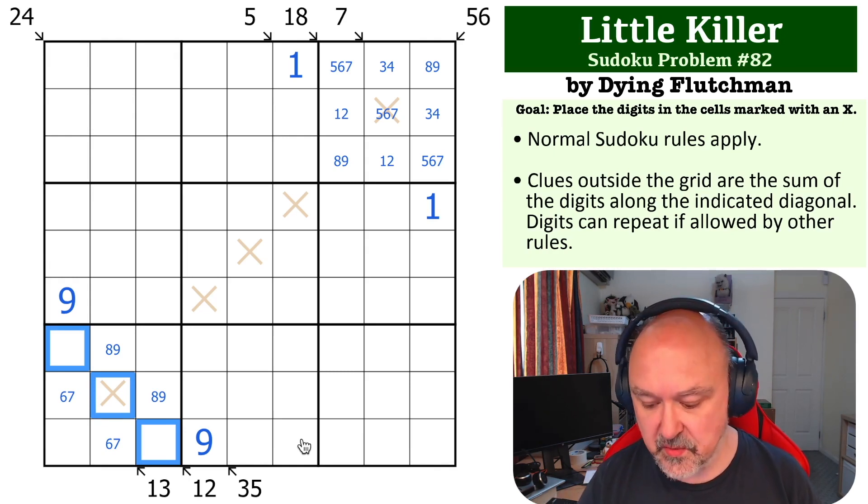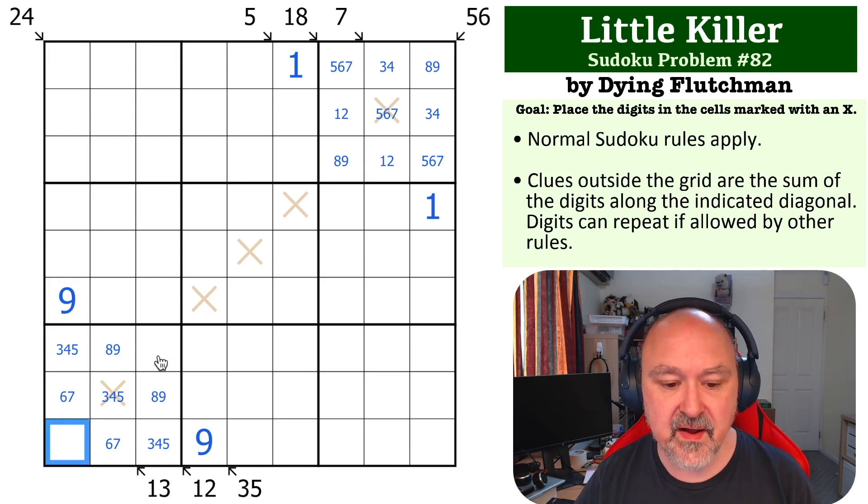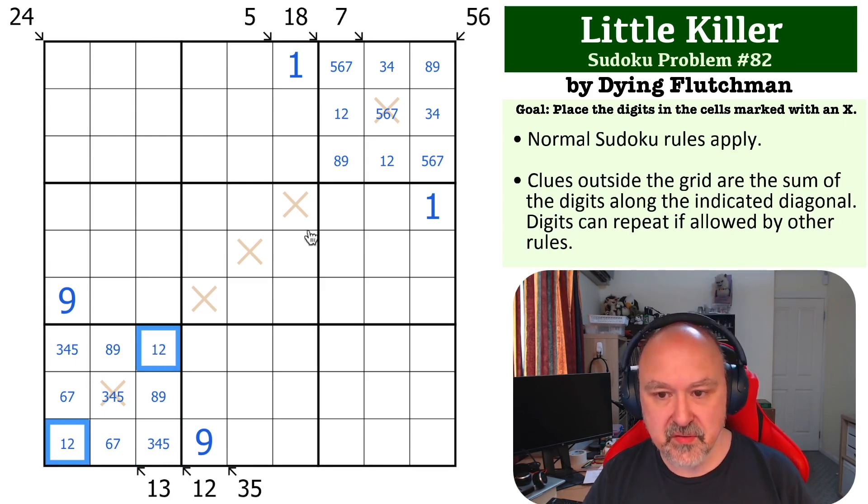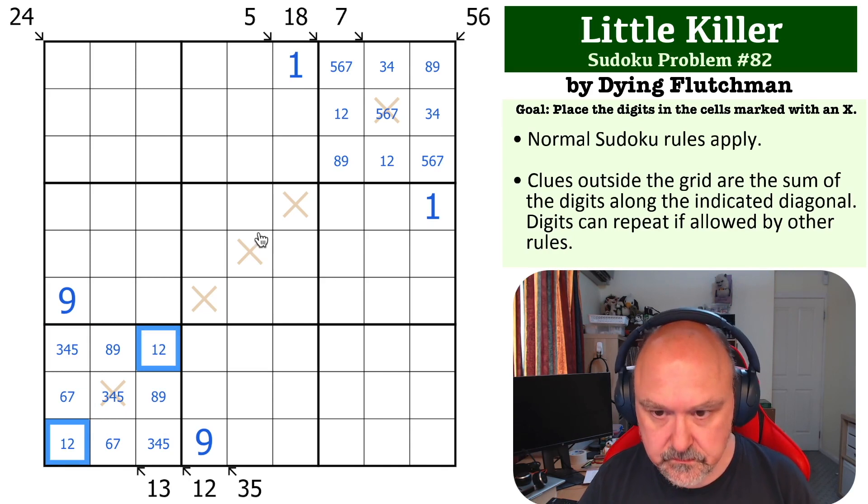Now we need to make 12 without 6, 7, 8, or 9. If we add the three next highest digits - 3, 4, and 5 - three and four is 7, add 5 you get to 12. So these are 3, 4, and 5, and these are 1 and 2.